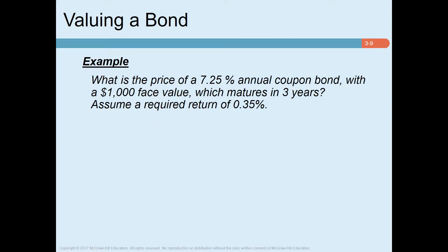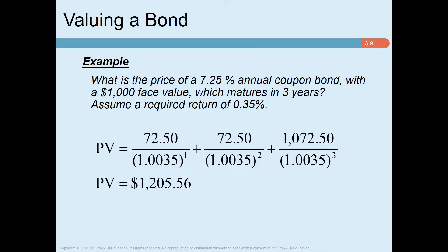Another example: what is the price of a 7.25% annual coupon bond with $1,000 face value maturing in three years, assuming a required rate of return of 0.35%? Again, 7.25% on $1,000 gives a coupon payment of $72.50. Discount each year's coupon using the required rate of return; in the final year you add the face value to the coupon. Summing these present values gives the bond's price.